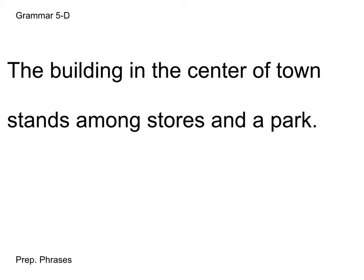Here we have the sentence: The building in the center of town stands among stores and a park. I am going to recommend that we cross out all of our prepositional phrases so we can find our subject and verb a little more easily. So I am going to start crossing them out: in the center of town, among stores, and a park. Remember, prepositional phrases start with a preposition and end with a noun or pronoun. And sometimes you can have one or more noun or pronoun as your object of the preposition. So now we have just a very basic sentence: the building stands — building is our subject and stands is our verb.